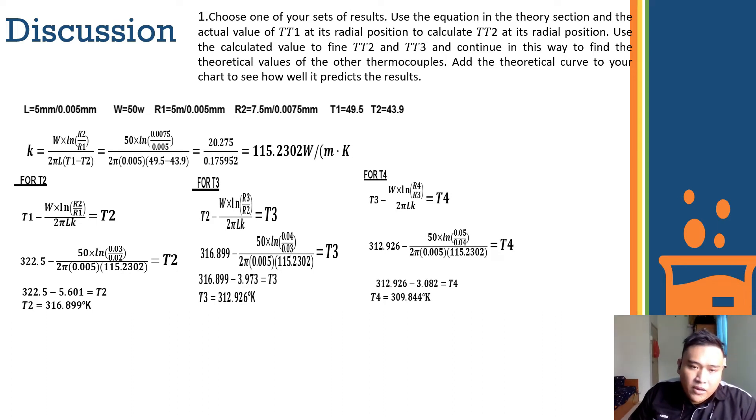And to finish the process of finding T1, for T1, we already have the data. That's 49.5 plus 273 which equals 322.5 kelvin. And then we proceed to find the T2 value by using T1 minus the watts multiplied by natural log of r2 over r1, divided by 2 pi length times k, equal to T2. That's how we find T2. And we proceed to the calculation, we get T2 equal to 316.899 kelvin.